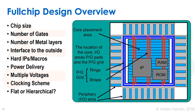Looking at a typical chip design, we can see a periphery or IO area. These IOs are really big — they are large buffers. We'll go deep into them in a later part of the course, but they're huge, and so we usually put them in the periphery of the chip where they have a big space that you can differentiate from the rest.